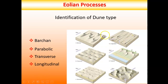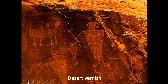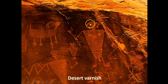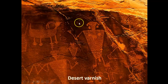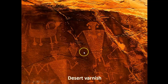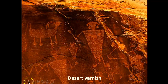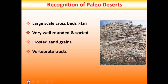Desert varnish is a coating found on top of a lot of sandstones and desert deposits. There's still some argument about whether it's biological — whether something is growing on the rock and causing it to be stained — or non-biological. People carve away that coating to leave petroglyphs, which you might have seen. Desert varnish definitely exists and is typically found on sandstones.